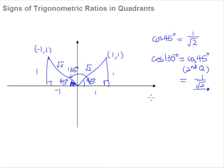Now we move on to cosine 225 degrees. From previous experience, 225 degrees is the same as 45 degrees in the third quadrant. This point will be negative 1 (x) and negative 1 (y), and the hypotenuse is still square root 2. So to find cosine 225 degrees, it is the same as finding cosine 45 degrees in the third quadrant. The adjacent side is again negative 1 over the hypotenuse of square root 2, giving us negative 1 over square root 2.